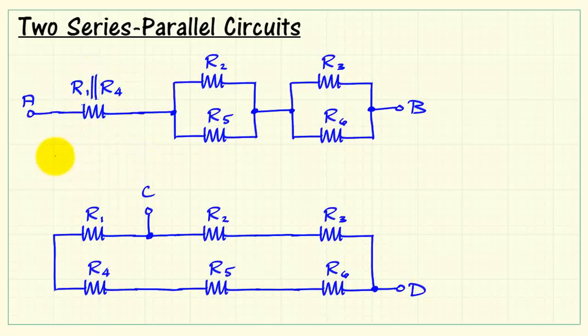Symbolically, you use the same parallel symbol from geometry. We write that as R1 in parallel with R4. Now we would calculate that equivalent resistance as the sum of the reciprocal of the resistances, and then the reciprocal of that sum.